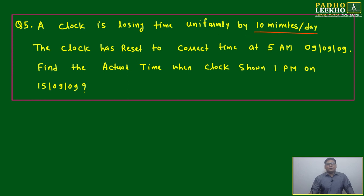A clock is losing time uniformly by 10 minutes per day. The clock has reset to correct time at 5 AM on 09/09/09. Find the actual time when clock shows 1 PM on 15/09/09. The clock was reset at 5 AM on 9/9/9 showing exact time. Find the actual time when clock shows 1 PM.